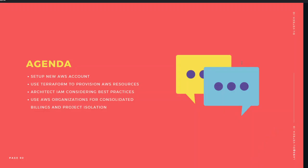Let's quickly go through the agenda to understand what will be covered over this series of videos. We'll be looking at a problem statement and we will start with setting up a new AWS account. We will architect IAM considerations using best practices, provision resources using Terraform, and later cover AWS Organizations service for consolidated billing and project isolation. Before that we'll also discuss why there is a need for a service like AWS Organizations.